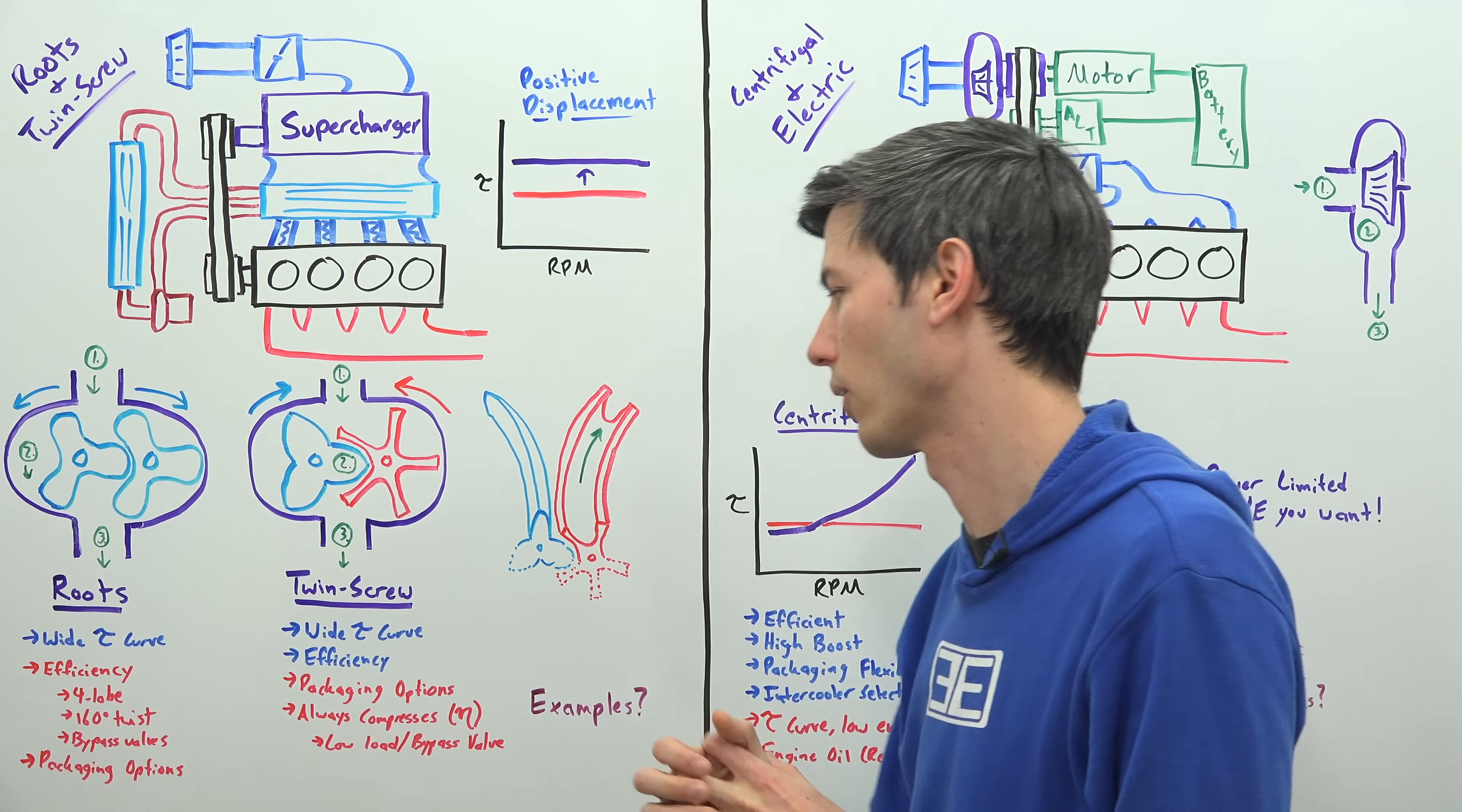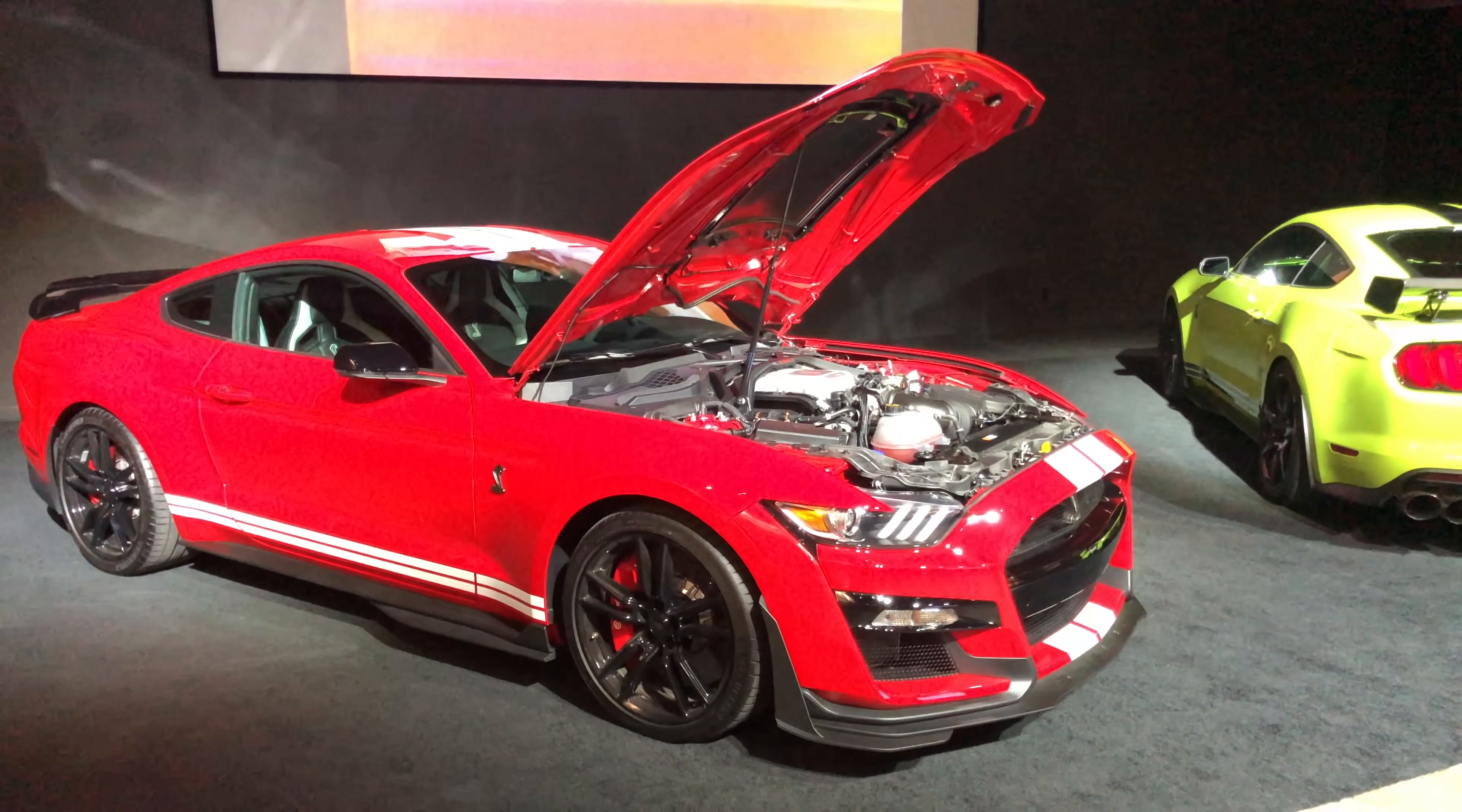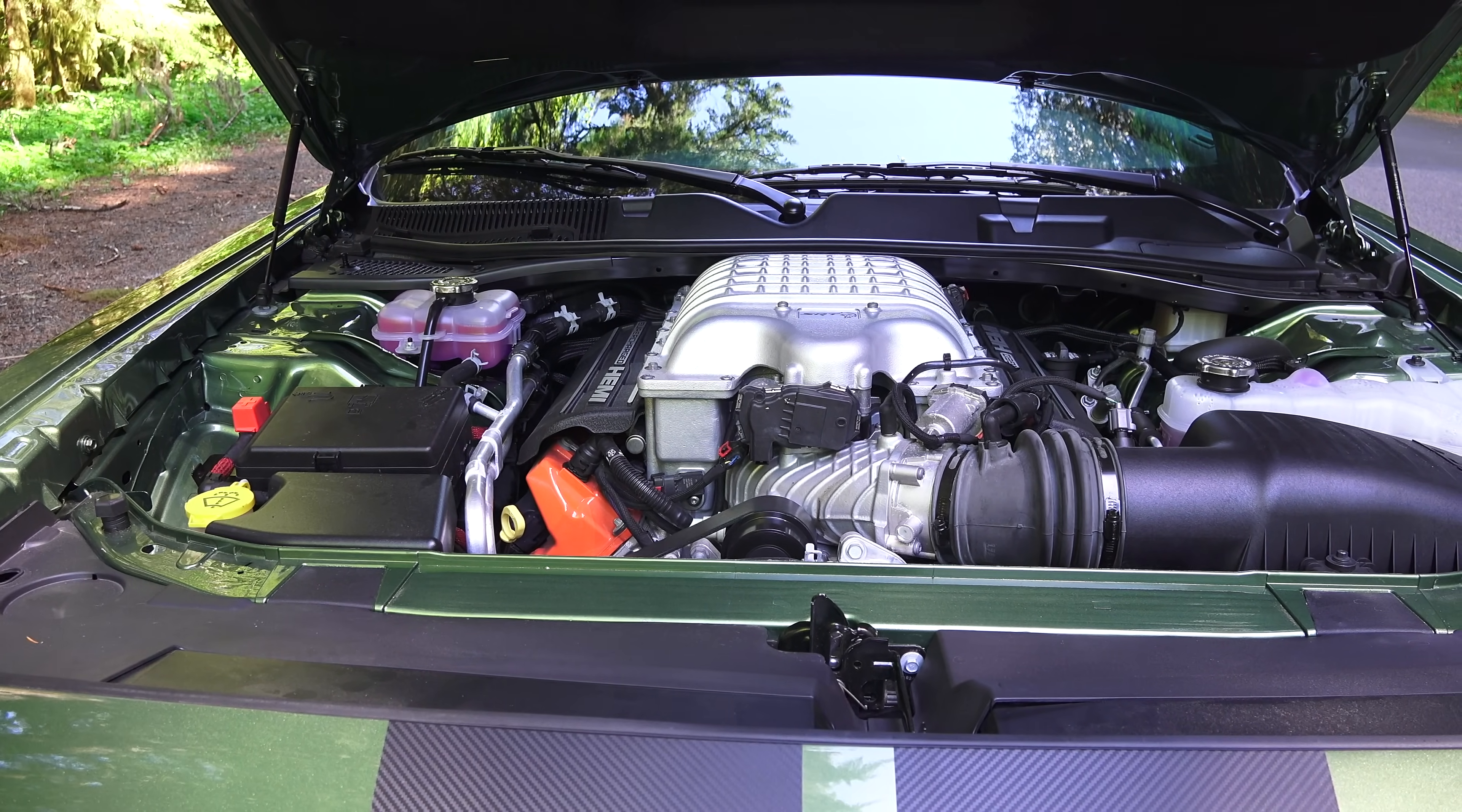So if you don't have a bypass and you do push air through it, you are going to be raising the temperatures. Some examples of some cars that these are used on - Roots style superchargers you can find of course on the GT500 that we were showing, on the Corvette ZR1, Lotus Exora S. And this is a Roots style supercharger that will be going on my MX-5. Now for the twin screw superchargers, of course this is going on all of the Dodge Hellcats. It was also used on the previous generation Ford GT.